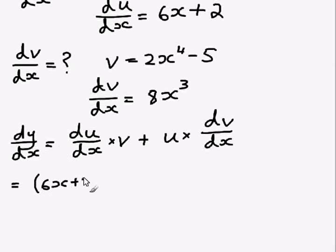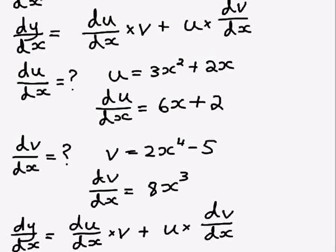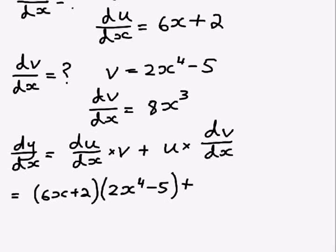So du dx equals 6x plus 2, v equals 2x to the power of 4 minus 5, so that's the first half done, plus, now u is, I have to check up, u is 3x squared plus 2x. So write that down, remember to put it in brackets because all of u is multiplying the next thing, not just the last bit. And then dv dx we've just worked out is 8x cubed.